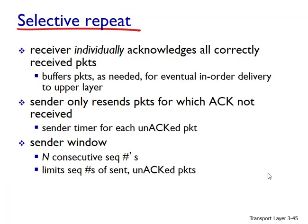The Go Back N protocol allows the sender to potentially fill the pipeline with packets, avoiding the channel utilization problems we noted with stop-and-wait protocols. However, there are scenarios in which Go Back N itself suffers from performance problems. When the window size and the bandwidth-delay product are both large, a lot of packets can be in the pipeline. A single packet error can then cause Go Back N to retransmit a large number of packets — many unnecessarily — and as channel errors increase, the pipeline can become filled with these unnecessary retransmissions.